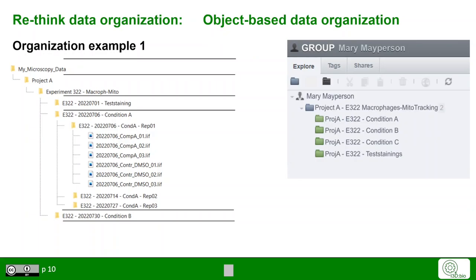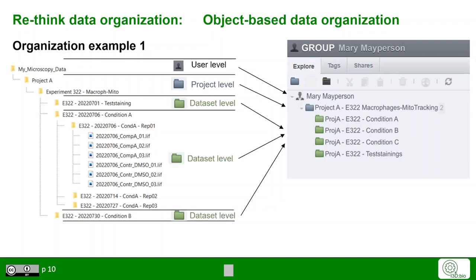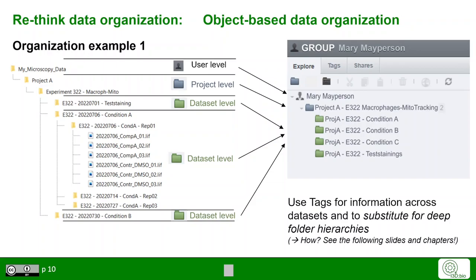Here is an example of transforming a deep folder hierarchy into a hierarchy in Omero. The highest level is the user level, and we also put in the project level for a specific type of experiment — for example, my tool tracking. Then all the other subfolders go into the dataset level hierarchy, a flatter hierarchy than in the original file folder on the left-hand side. So how do we account for the additional information hidden in that file folder hierarchy? We use tags to annotate information across those datasets and to substitute for deep folder hierarchies. We will go into detail on how to do this in later chapters.